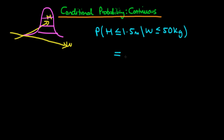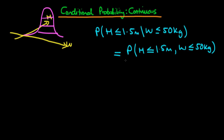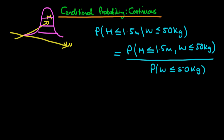We can use our formula, where the numerator is the probability that height is less than or equal to 1.5 meters and weight is less than or equal to 50 kilograms. Then we divide by the marginal probability that weight is less than or equal to 50 kilograms. We can use our contour interpretation of this PDF to help work out the marginal probability, as we did before.